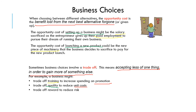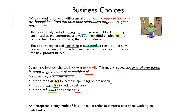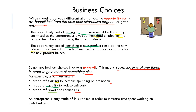Another trade-off might be between rewards and risk. We could have more reward if we were to enter the Chinese markets; however, this would also increase the risk because we don't understand the culture or how to set up a business there. So we might have to reduce the reward in order to reduce the risk. When talking about business choices, we need to be aware of these two concepts: opportunity cost and trade-offs. A final example — an entrepreneur may trade leisure time in order to increase time spent working on their business, which illustrates a trade-off.